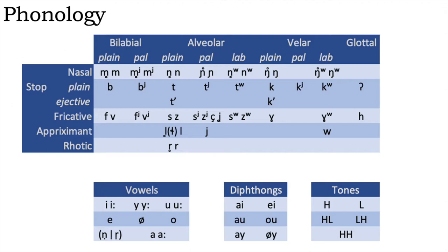This is the phonological inventory of Alpine Neptune. Worth noting are the voiceless nasals, the ejectives, the voiceless trill, and the series of labialized and palatalized sounds. There is a simple tone system wherein tones only occur on stressed syllables, like in Mohawk. Here is an example of a tonal minimal pair.